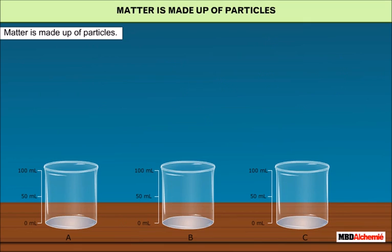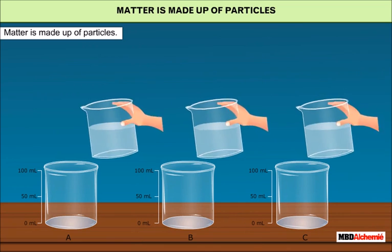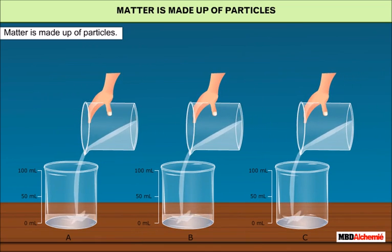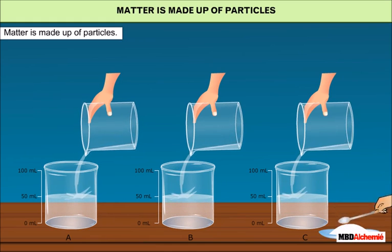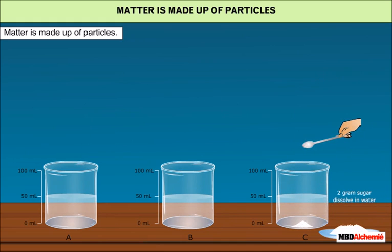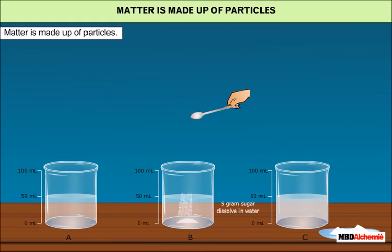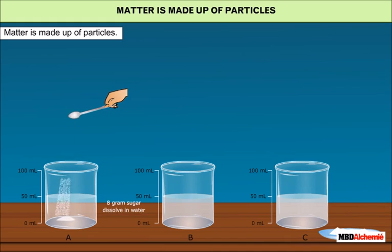Matter is made up of particles. Take 300 ml beakers and mark A, B, and C. Add 50 ml of water in each beaker and mark the water levels. Dissolve two grams, five grams, and eight grams of sugar in the beakers and dissolve it with the help of a glass rod.